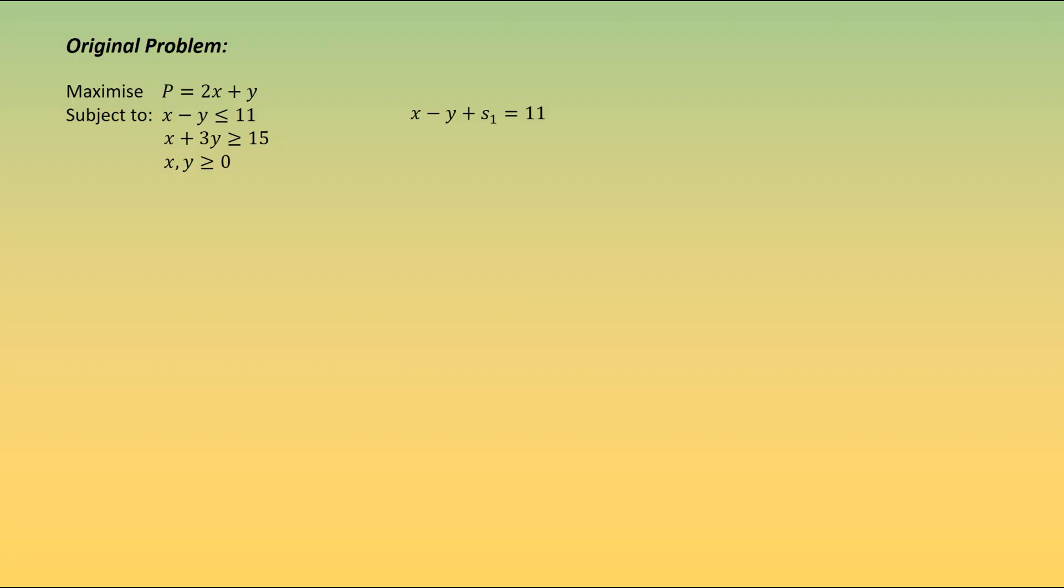When we work with the greater than or equal to constraint, we need to be slightly more creative. First, we're going to have x plus 3y being equal to 15. A necessary condition of introduced variables is that they must be non-negative, so we need to subtract the surplus variable s2. However, this introduces another problem. In bringing us down to 15, we need to think about the fact that our initial basic feasible solution has x and y both being equal to 0. If that were the case, we'd have 0 plus 0 minus a positive number, we would end up with a negative number. This can't happen.